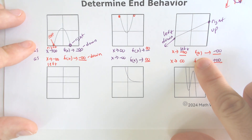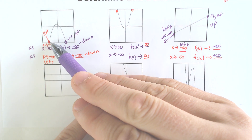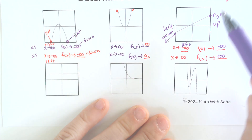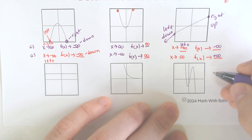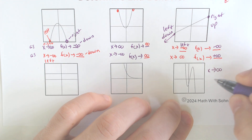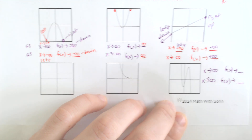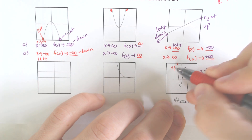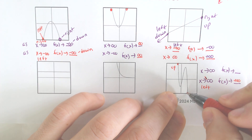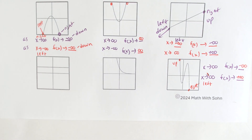Those are three of the things that can happen: both sides going down, both sides going up, or one down and one up. This last example goes from up on the left to down on the right. On the left side we were going up — so positive infinity. On the right side we are going down — so negative infinity.